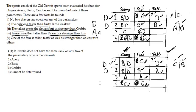The fourth question: if Crab does not have the same rank on any two parameters, who is the weakest? This condition eliminates Case 1, because in that table C has the same rank in two parameters. In Case 2, C is placed such that in the height column C should be at a different position than its speed and strength ranks. The weakest person — rank 4 in strength — is Crab. So the answer is the third option.